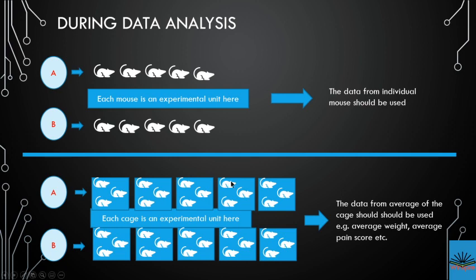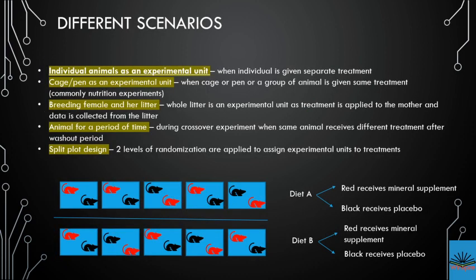Sometimes in animal experiments, due to ethical concerns, we may not be able to use many animals. For example, if blood collection is only possible on individual mice and not all of them, we might use each individual mouse as an experimental unit. This is not perfectly ideal, but may be acceptable as long as you have sufficient sample size and have considered all other issues.